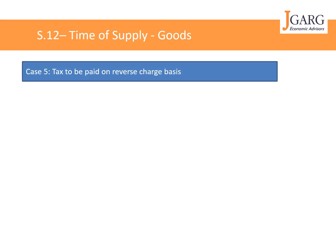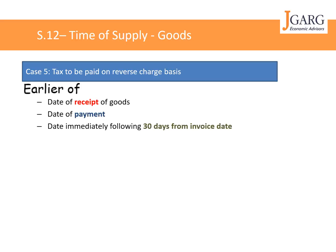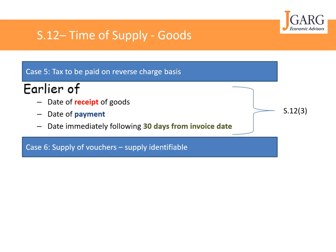Another case is when tax needs to be paid on a reverse charge basis, where the receiver pays the tax rather than the supplier. In this case, the time of supply is the earlier of: the date of receipt of goods, the date of payment, or the date immediately following 30 days from the date of issue of invoice — not the receipt of invoice. This is in line with Section 12 subsection 3.